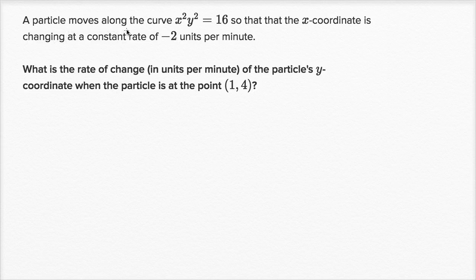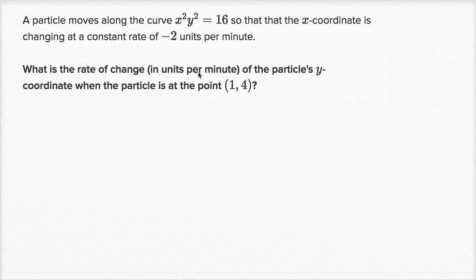We're told that a particle moves along the curve x squared y squared is equal to 16, so that the x coordinate is changing at a constant rate of negative two units per minute. What is the rate of change in units per minute of the particle's y coordinate when the particle is at the point one comma four?